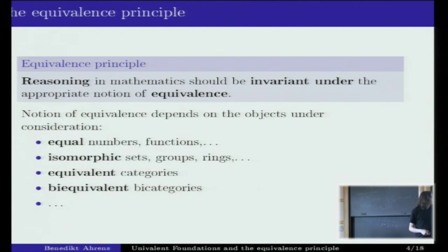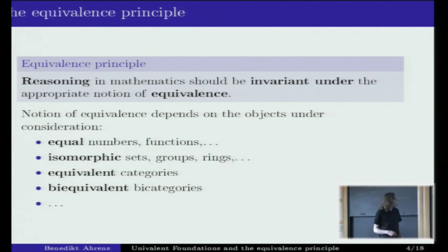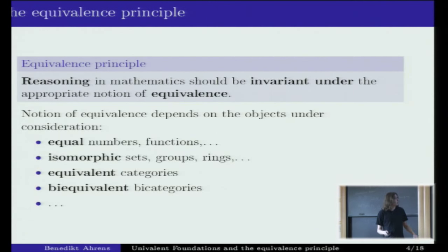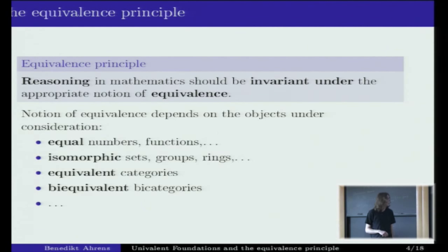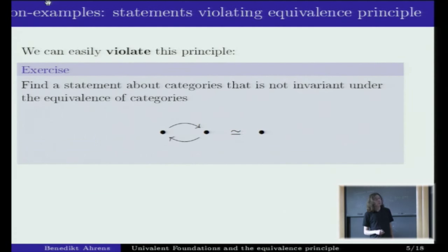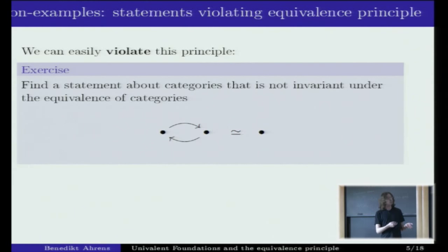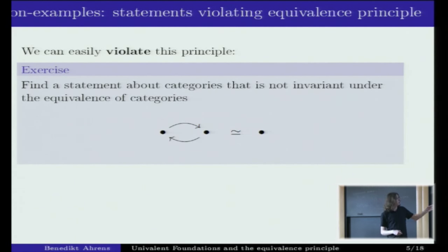If we consider sets, groups, or rings, we consider them up to isomorphism. If you go up in the categorical hierarchy, in some sense it becomes equivalence by equivalence, and so on. This equivalence principle is something that is not enforced — it is the mathematician's responsibility to take care of not violating this principle.